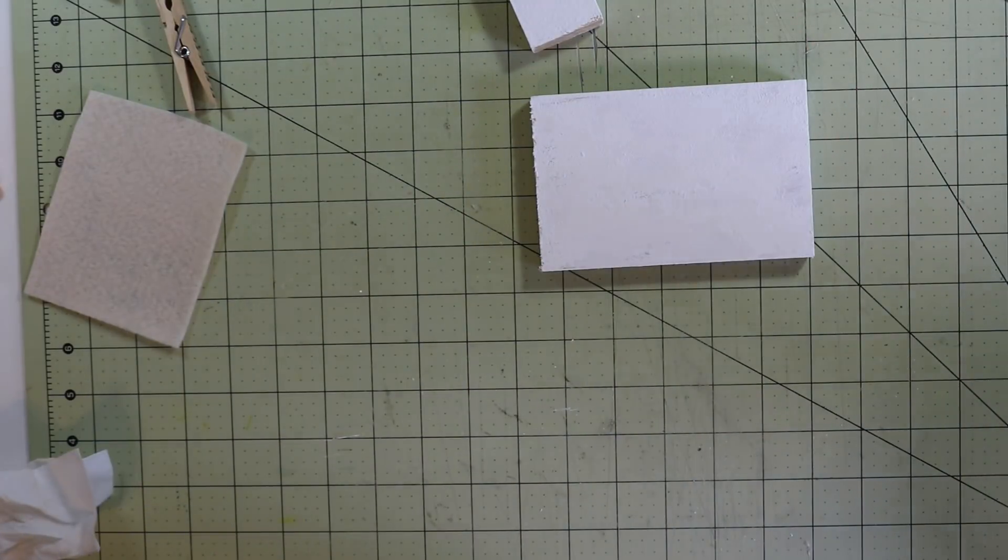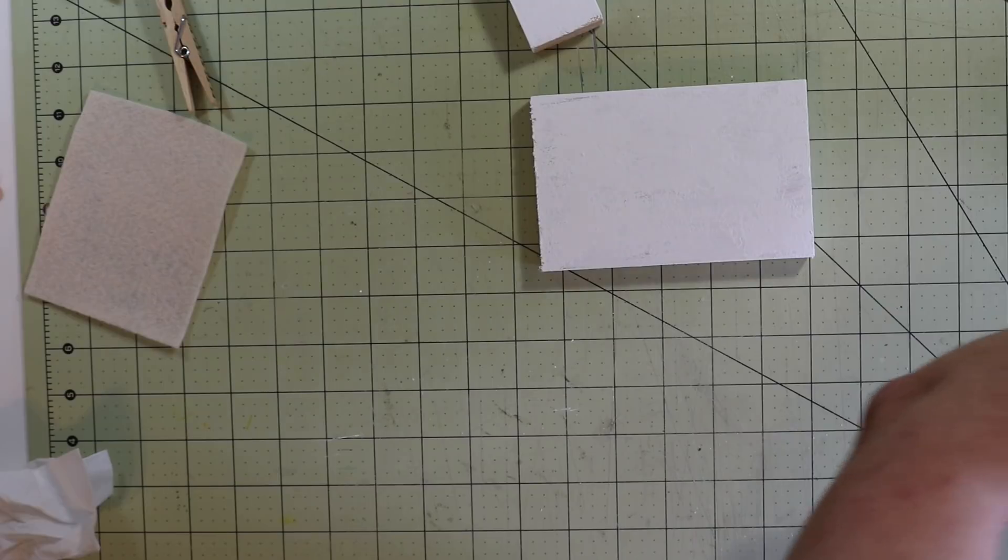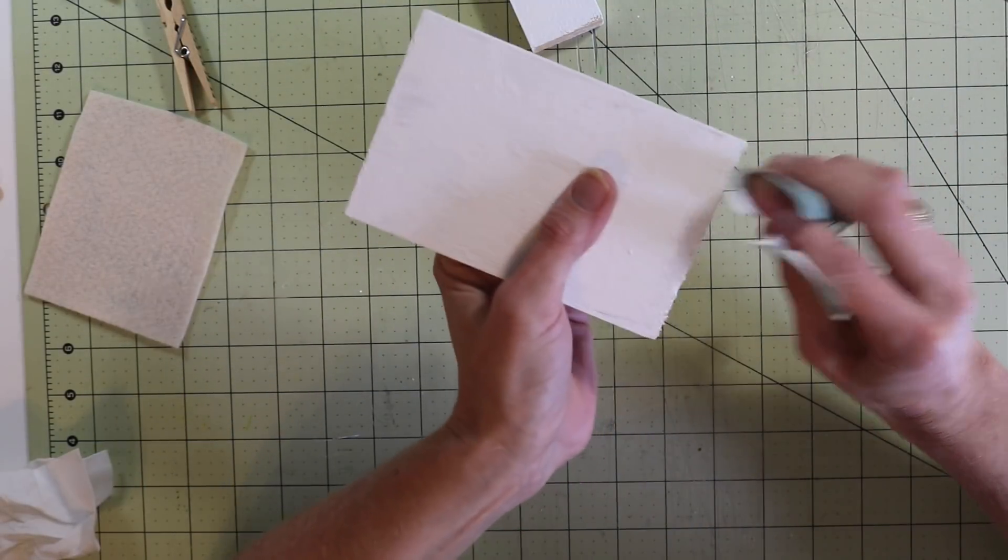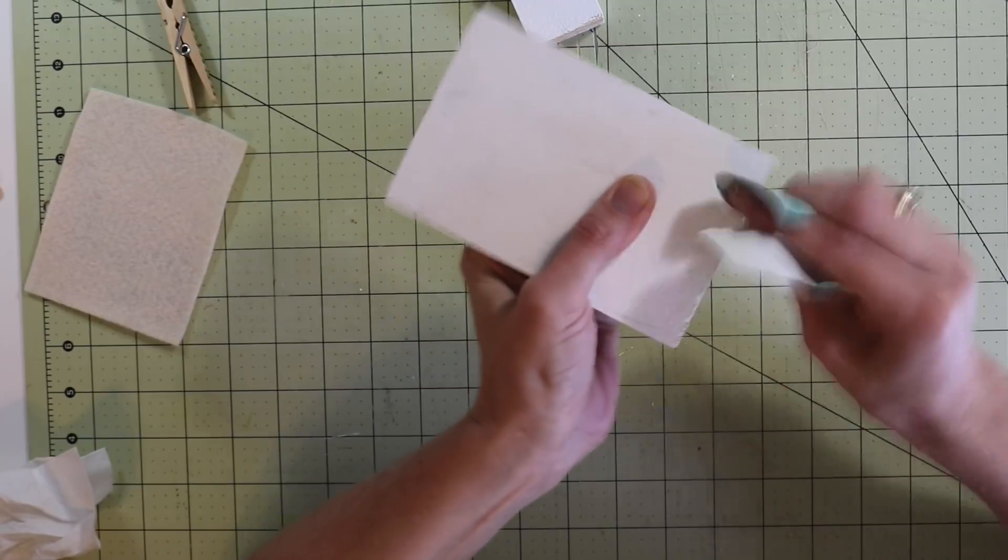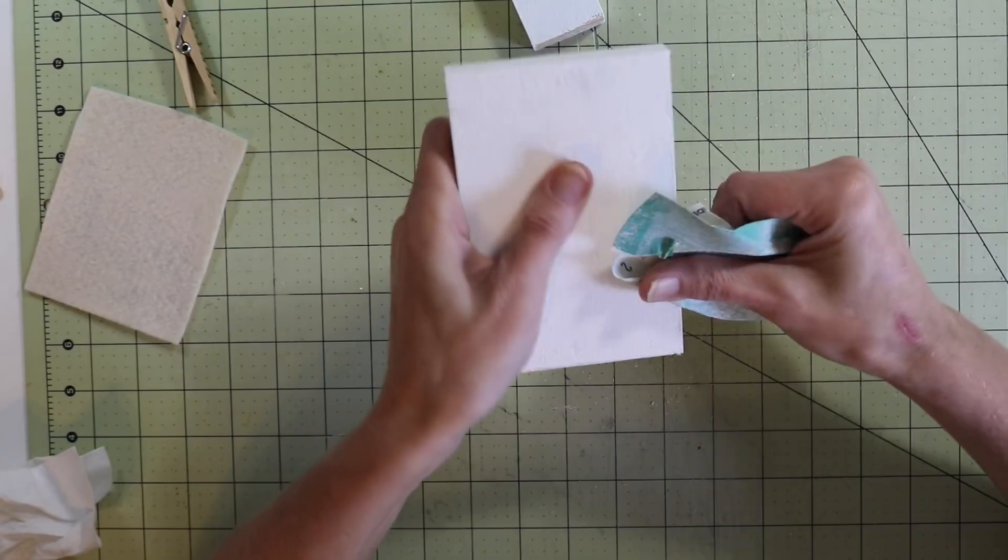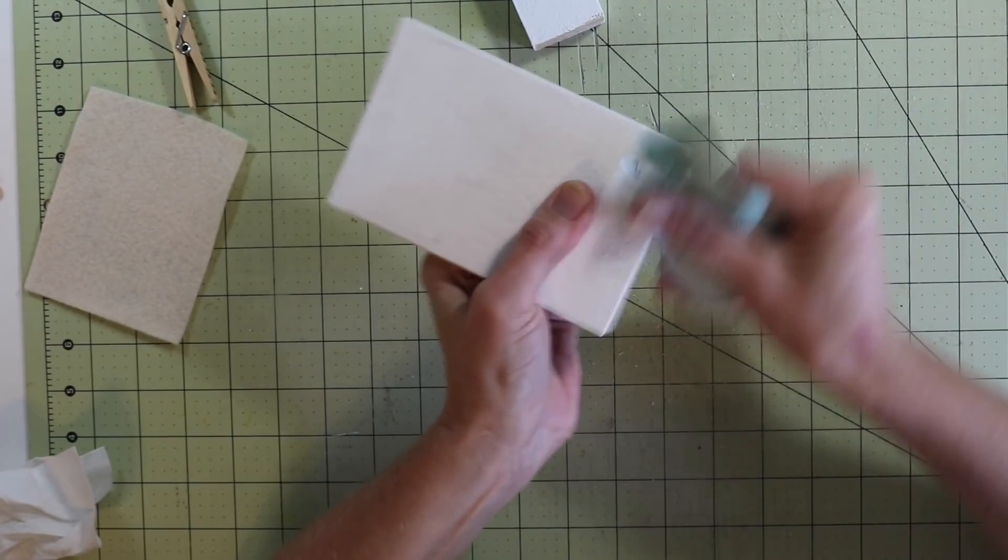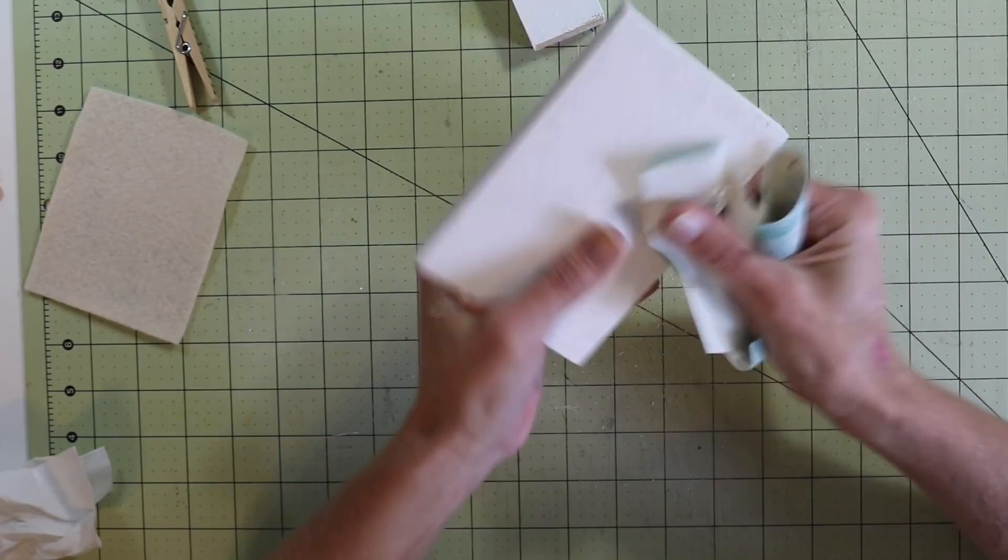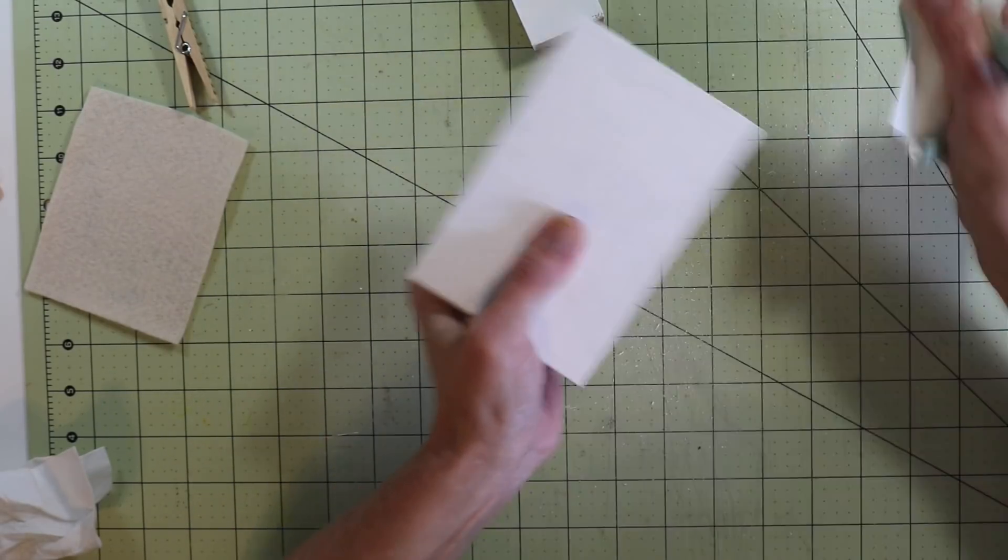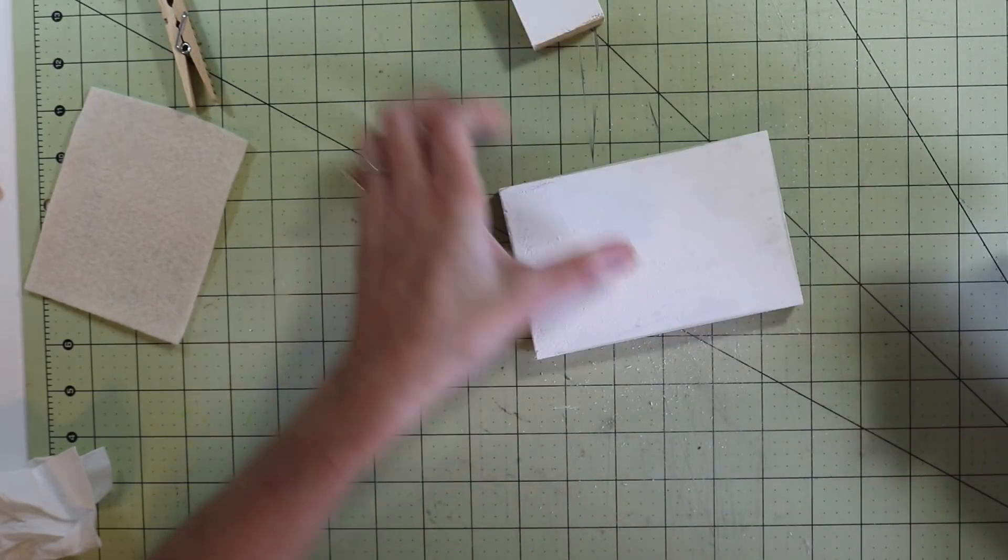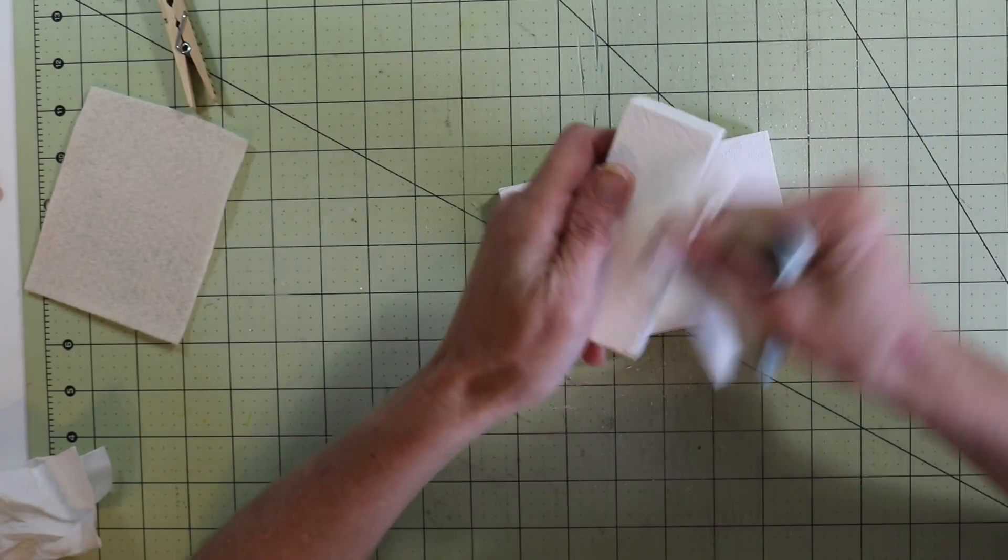Now I have some sandpaper over here. I'm going to cut a little piece off. I want to sand down some of the edges just so it kind of ages it a little bit. I'm going to do the same for my snowman.